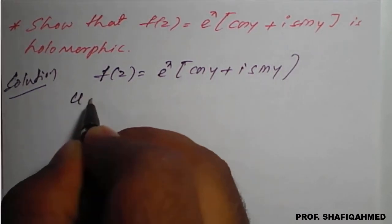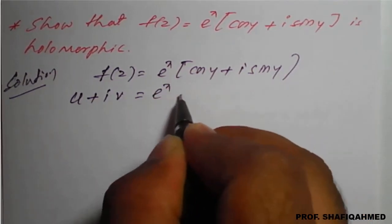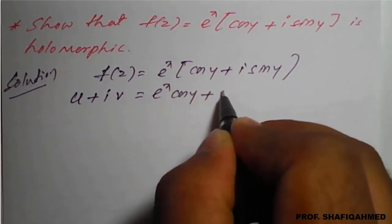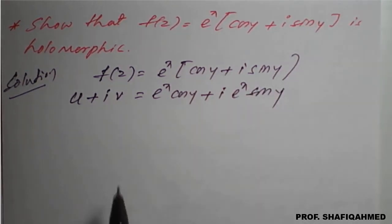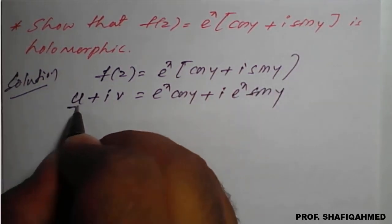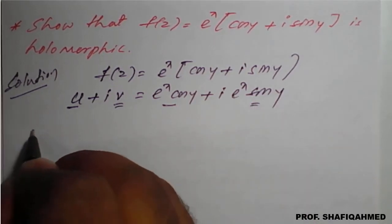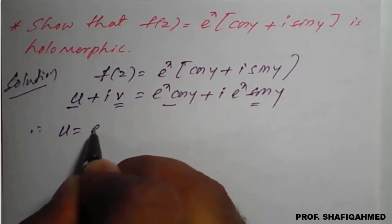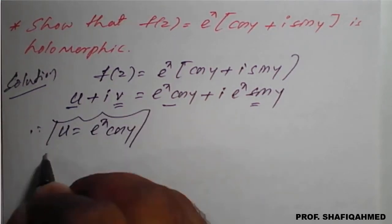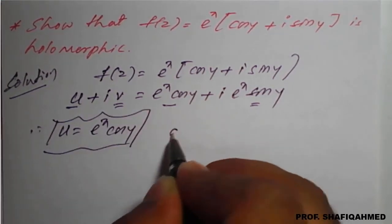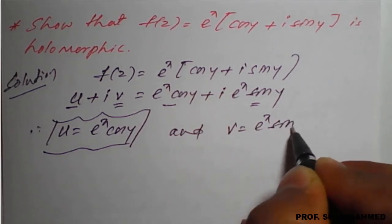We write u + iv = e^x · cos y + i · e^x · sin y. So the real part and imaginary part are identified. Therefore, u = e^x · cos y and v = e^x · sin y.